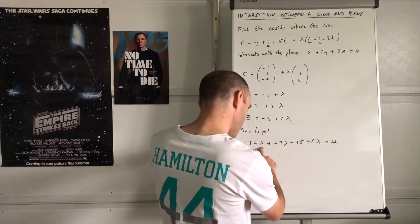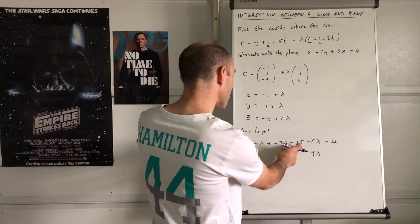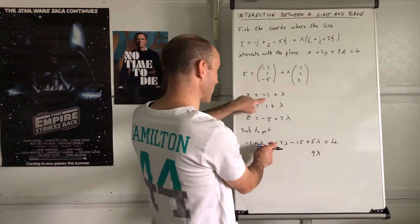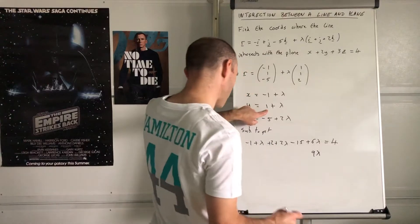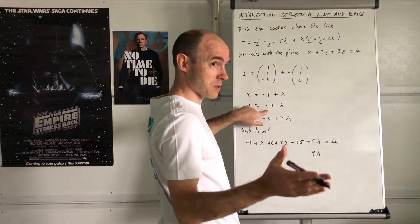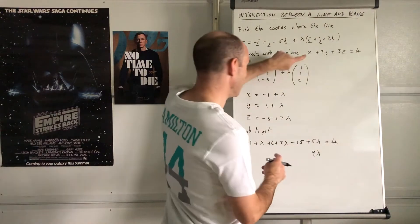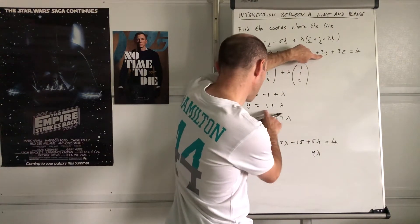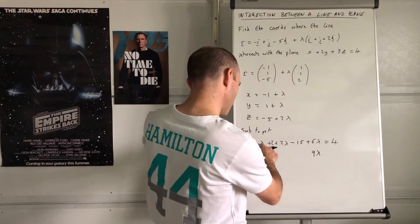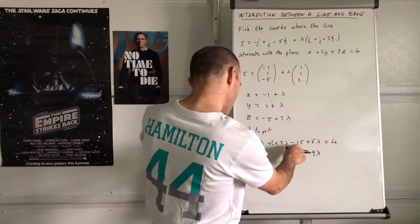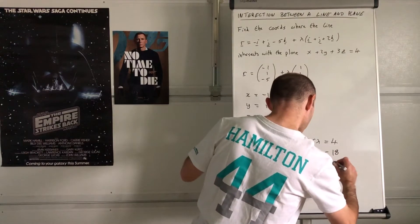Substituting in: (-1 + λ) + 2(1 + λ) + 3(-5 + 2λ) = 4. That gives: -1 + λ + 2 + 2λ - 15 + 6λ = 4. You've got one equation, one unknown: λ. Collecting terms: 9λ - 14 = 4, so 9λ = 18, giving λ = 2. Nice when it works out to a nice integer value.